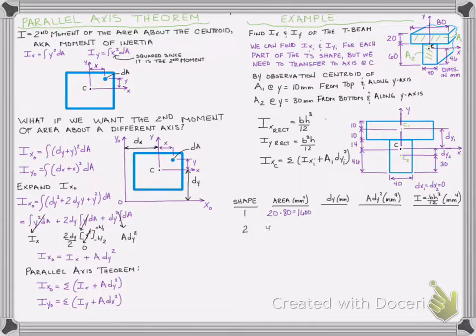So we can jump right in, and area 1 is just going to be 20 times 80, which is 1,600 millimeters squared. Shape 2 will be 40 times 60, 2,400 millimeters squared. We've already defined our D-Y distances. Those were 24 and 16. And then we can just take A D-Y squared, solve those numbers, and go ahead and find the summation. So we end up with this huge number of 1,536,000 millimeters to the fourth.